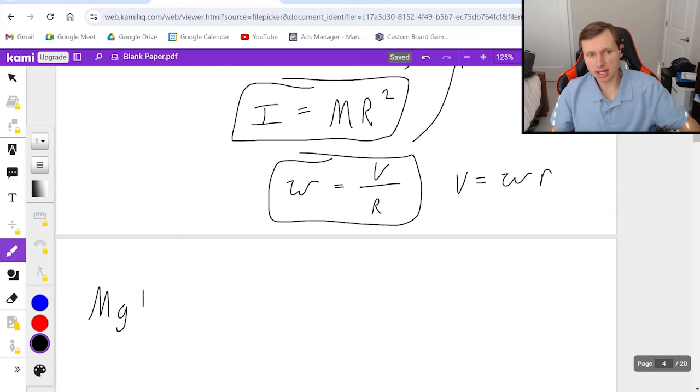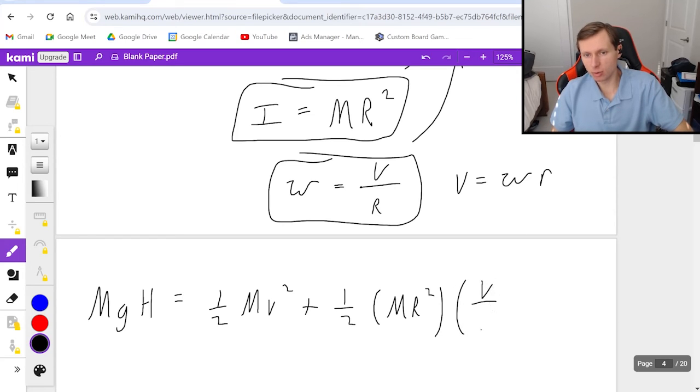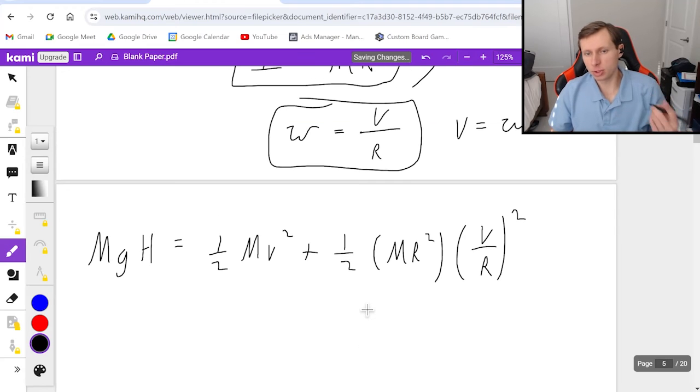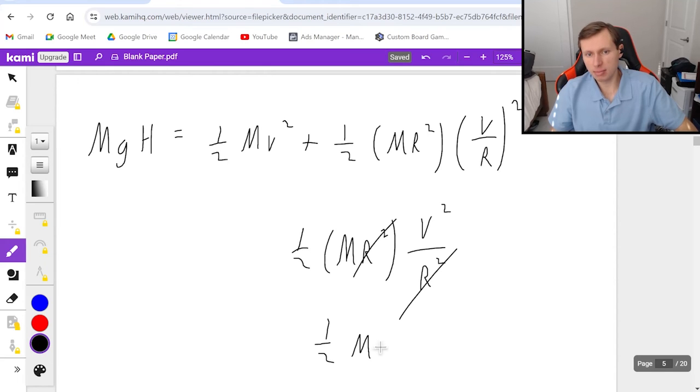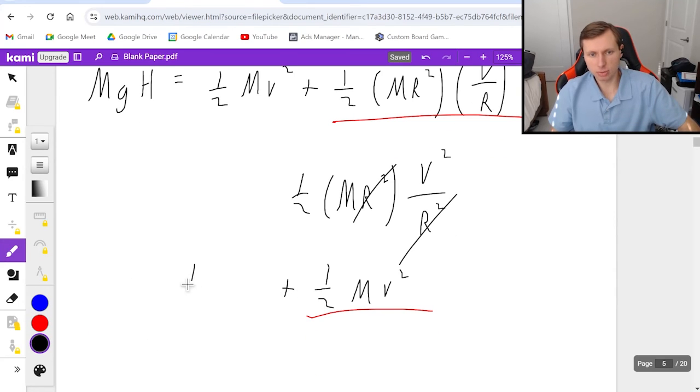In other words, left side does not change, still MGH. Right side, still one half mv squared. But now plus, it's going to be one half I, which is MR squared, times omega squared, which is v over r quantity squared. Now I got to solve, I got to reduce as much as I can. First thing I'm going to do is when I square this, I got to square both the numerator and the denominator. So it's really v squared over r squared, and then times MR squared, times one half. And if I want to reduce this, I would say that the r squareds cancel right here. Very nice. Leaving me with one half mv squared for this portion of the equation. And then just write the rest of it. So plus one half mv squared, and on the left, MGH.